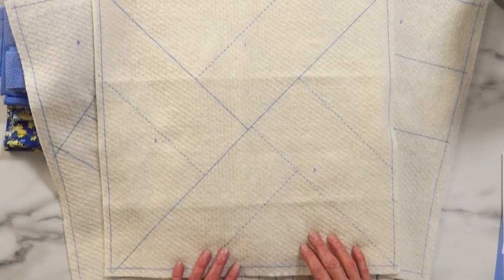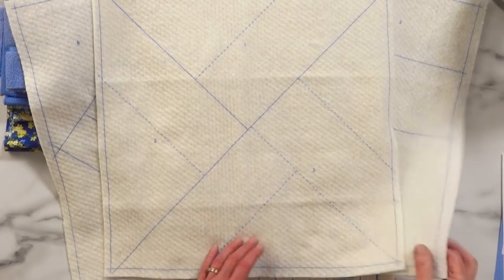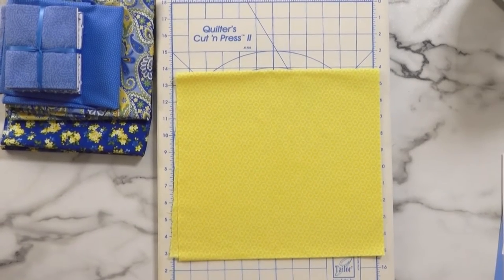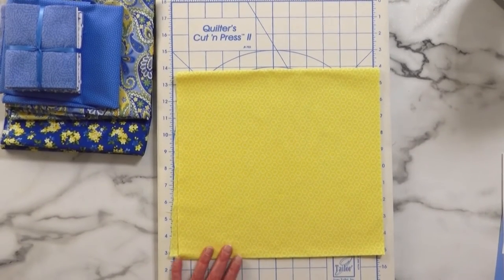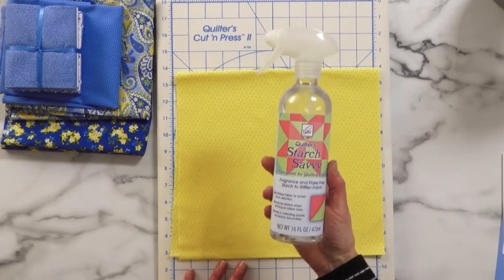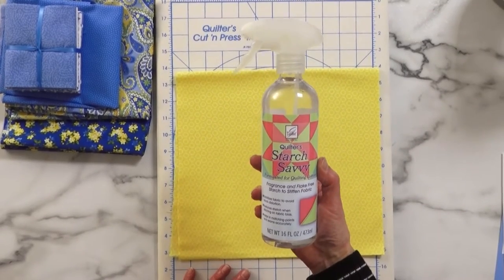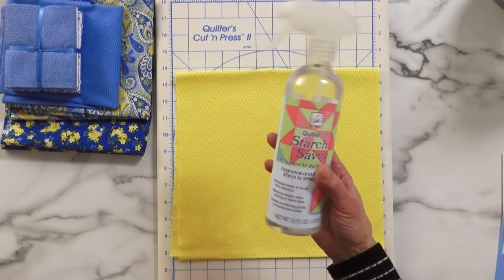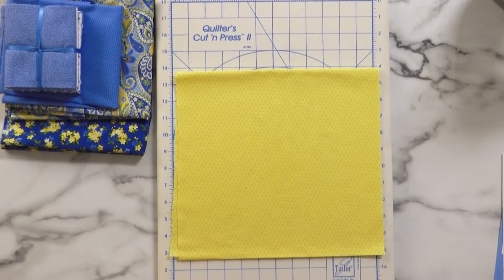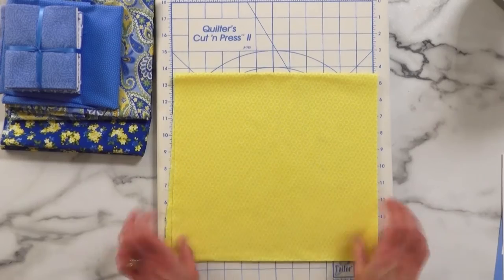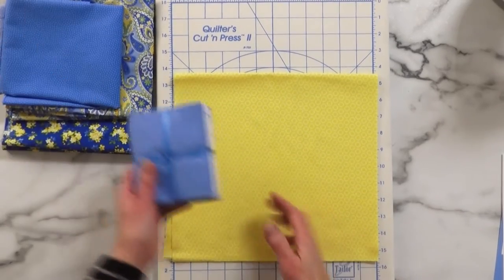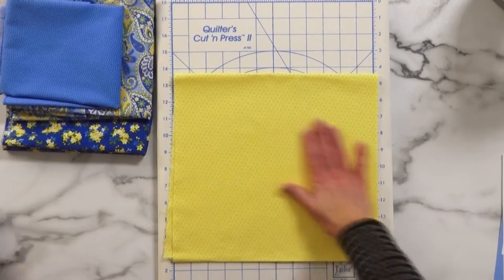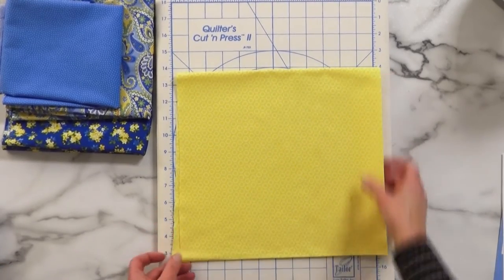Our printed pillow top batting has been trimmed to size and the next step is to cut our fabrics. Before cutting our fabrics we recommend that you starch them first. June Taylor makes a starch called Quilter Starch Savvy that's been designed specifically for quilting cottons. Other starches however can be used. Whether you choose to use yardage goods or pre-cut fat quarters, you want to starch them first to make them nice and stiff.